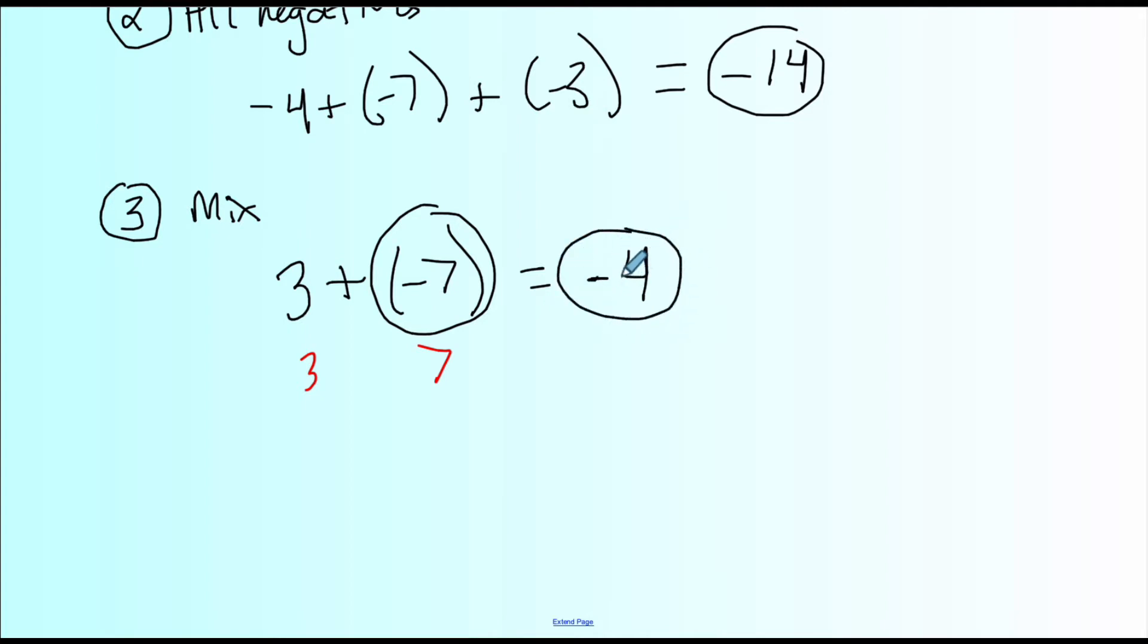Another way I explained this was, think of it as money. Three dollars and seven dollars of debt, the net of that is you'd have four dollars of debt. You'd be able to pay three dollars of that seven dollar debt, but you'd still owe four.